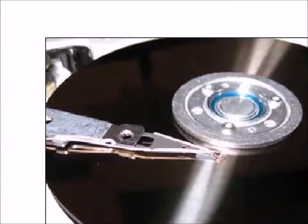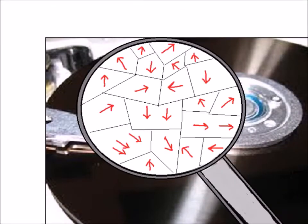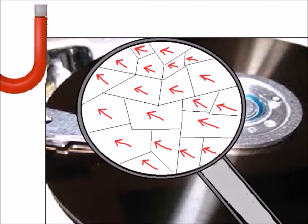Scientists think that magnetic materials consist of groups of atoms called domains. Before a material is magnetized, its domains are randomly arranged. When a magnet is brought near the material, all the domains align in the same direction.